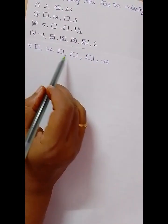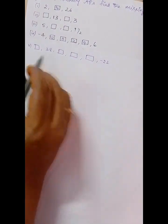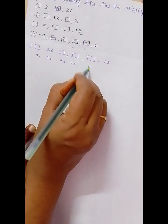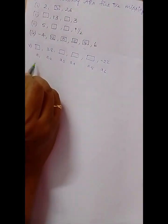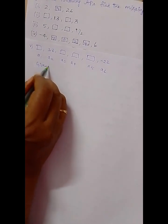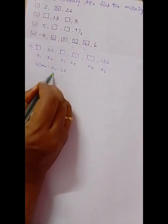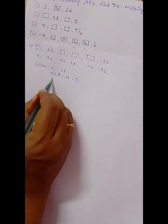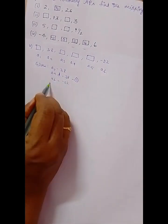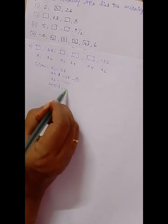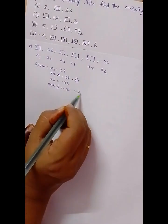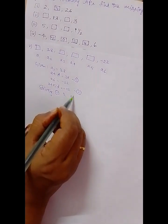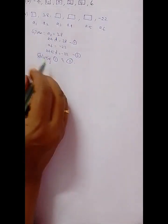The fifth problem: _, 38, _, _, _, -22. We have a1 through a6. a2 = 38, which gives a + d = 38 (equation 1). a6 = -22, which gives a + 5d = -22 (equation 2). We will now solve equations 1 and 2.